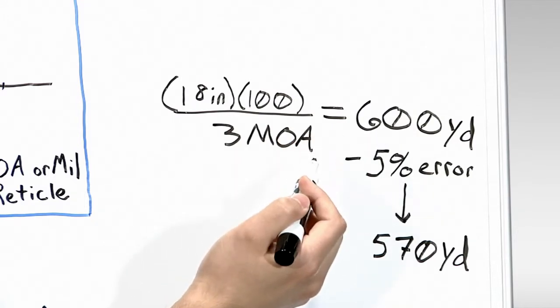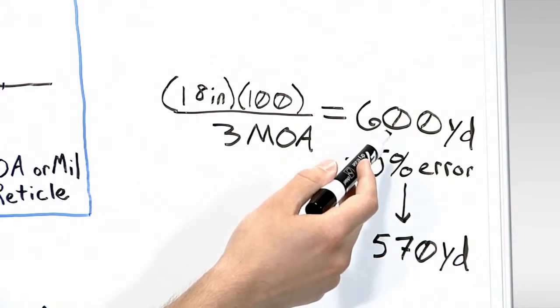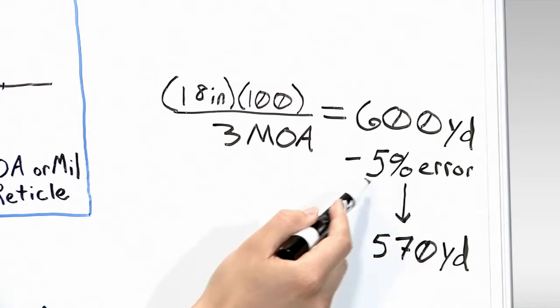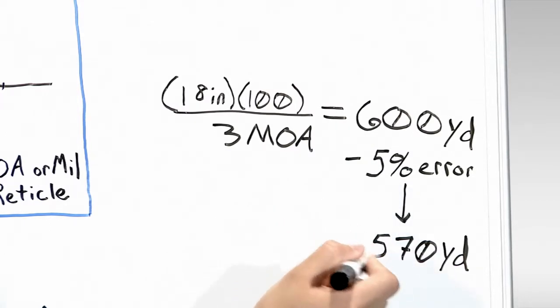And if we left it at that, we would assume that our target is 600 yards away. But if we don't account for this 5% error, we wouldn't see that our target is actually 570 yards away. This is a significant difference to you as a shooter. If you're compensating for 600 instead of 570, it could cause you to shoot high.